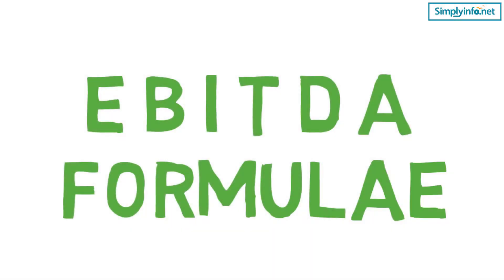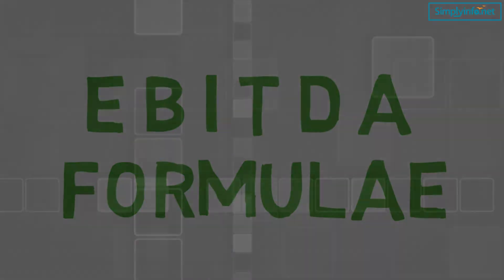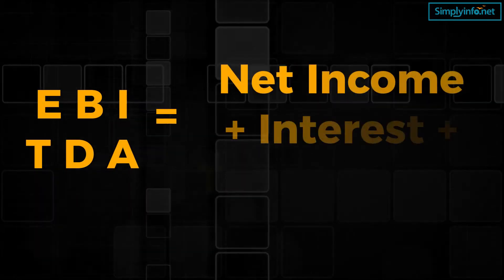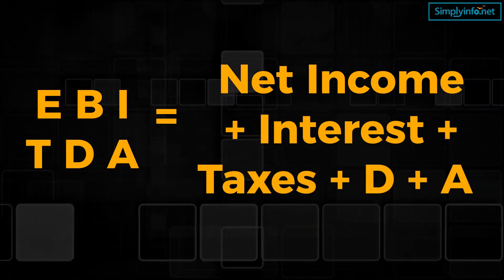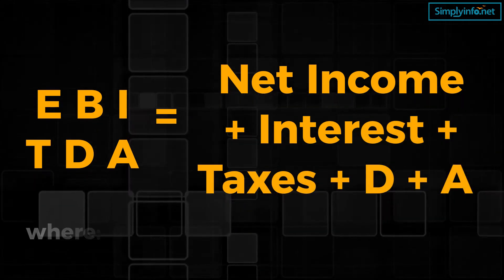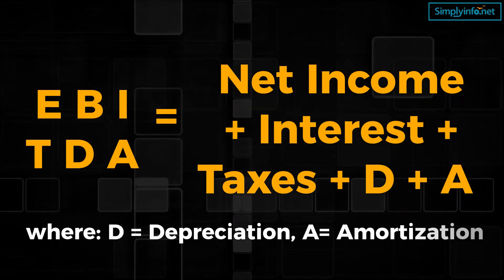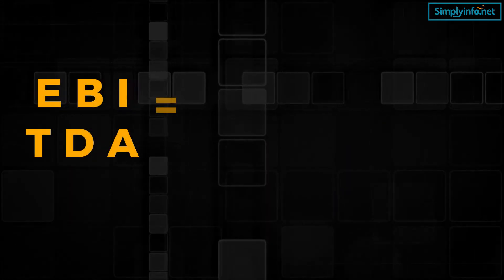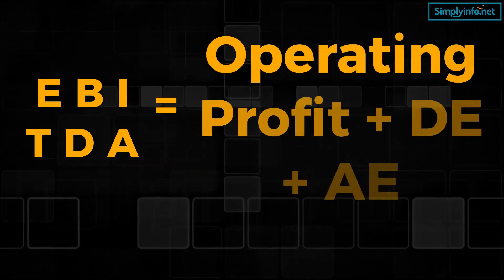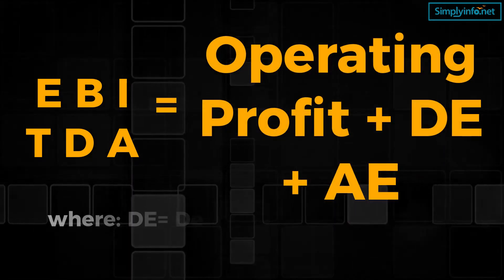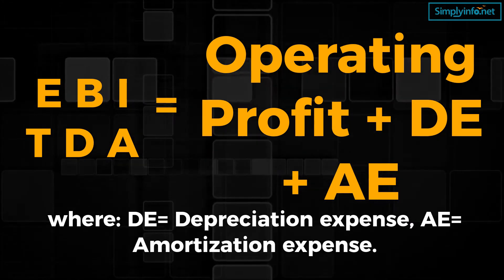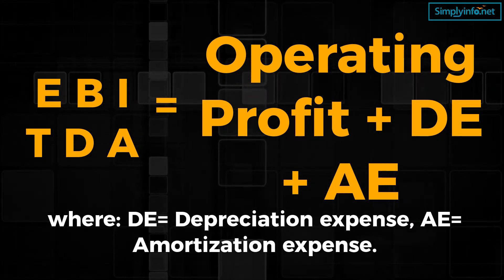Now let's look into the EBITDA formula. EBITDA = Net Income + Interest + Taxes + D + A, where D = Depreciation and A = Amortization. Alternatively, EBITDA = Operating Profit + Depreciation Expense (DE) + Amortization Expense (AE).